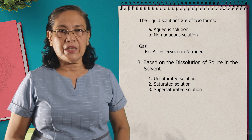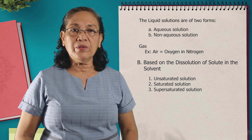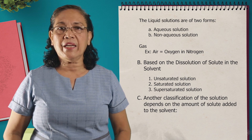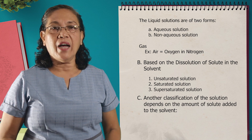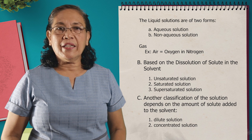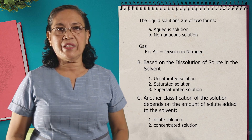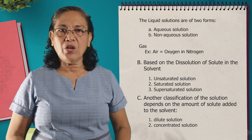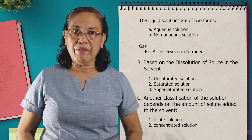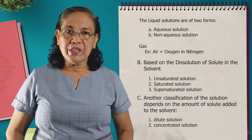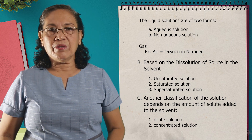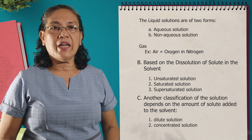So those are the types or classification of solution based on the dissolution of solute in the solvent. Let's go to the third classification of a solution that is based on the amount of the solute added to the solvent. We have, one, the dilute solution, and the other one is the concentrated solution. When we say dilute solution, this contains a little amount of the solute and a large amount of the solvent. But when we say concentrated solution, this contains a large amount of the solute present in the solvent.